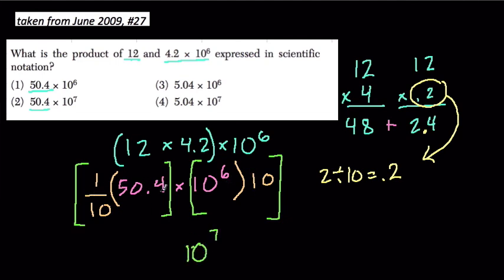1 tenth times 50.4 is the same thing as 50.4 divided by 10, or 5.04. And there we have it, our number in scientific notation. The answer is 4.